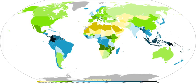Precipitation can be divided into three categories based on whether it falls as liquid water, liquid water that freezes on contact with the surface, or ice. Mixtures of different types of precipitation, including types in different categories, can fall simultaneously.